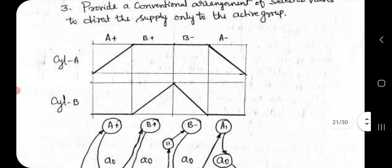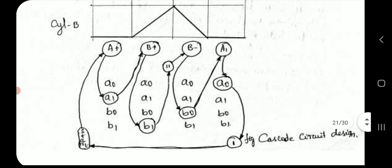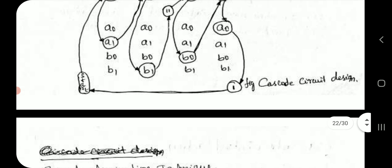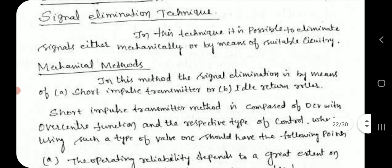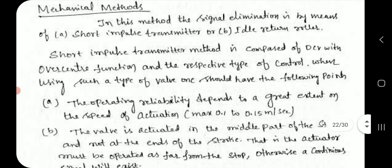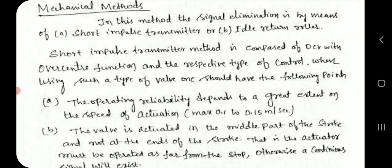Cylinder A and B diagram indicating cascade circuit design. Signal elimination technique: In this technique, it is possible to eliminate signals either mechanically or by means of suitable circuitry.